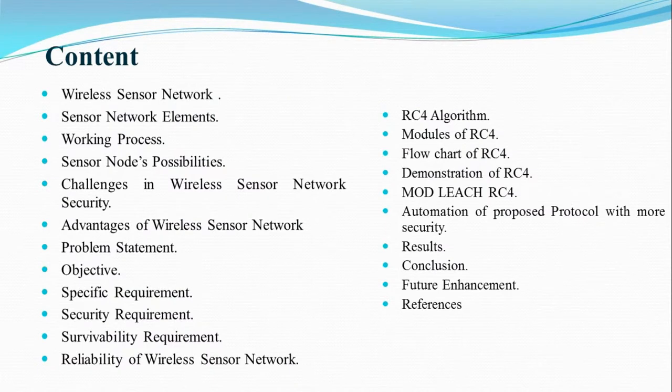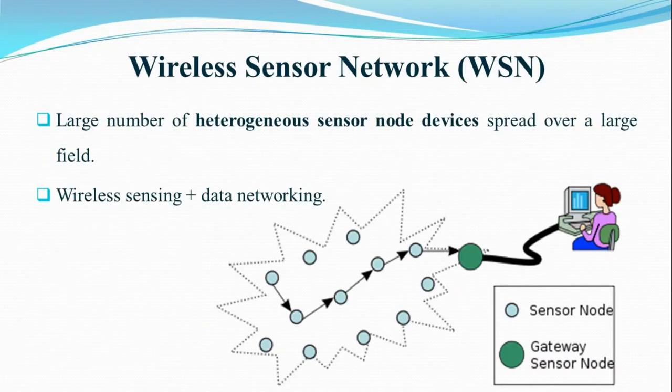This is the content of this presentation. The first question that arises is: what is a wireless sensor network, or WSN? A wireless sensor network is a type of network which contains various sensor nodes that are interrelated wirelessly without any cable, and that transmit data through the network from one end to another. In other words, a large number of heterogeneous sensor node devices separated over a large field is called a wireless sensor network.